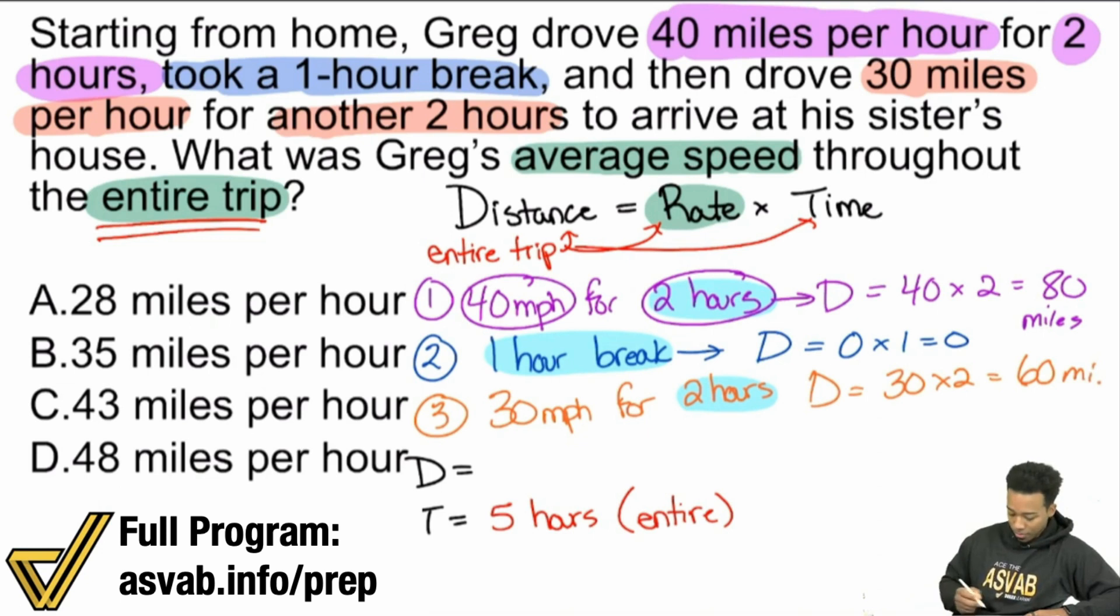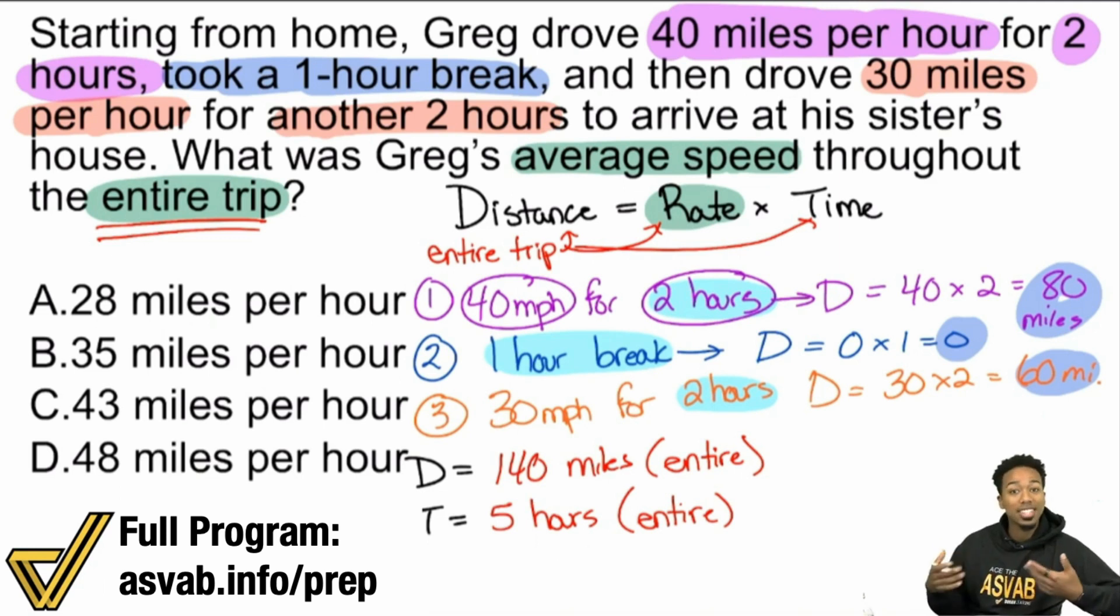Therefore, we're good. We have 80 miles plus zero miles plus 60 miles, that's going to be 140 total miles. That's for the entire trip. And so now that we have the distance for the entire trip, and the time for the entire trip, now we can go ahead and find the rate for the entire trip. You see where I'm coming from now?